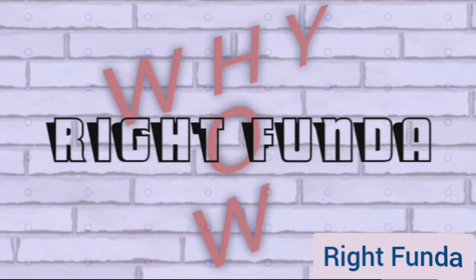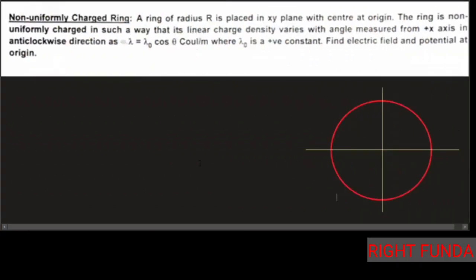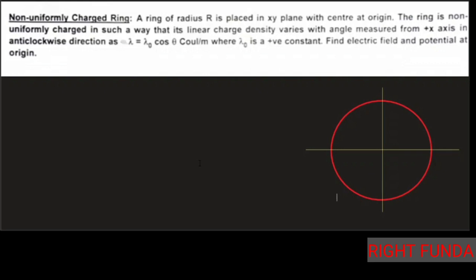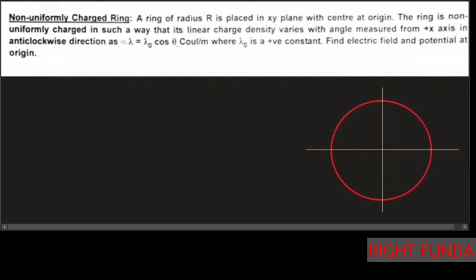Welcome to RideFunda. We have a problem due to a non-uniformly charged ring. A ring of radius R is placed in the xy-plane with center at the origin. The ring is non-uniformly charged such that the linear charge density varies with angle measured from the x-axis in anticlockwise direction as λ = λ₀·cosθ coulombs per meter, where λ₀ is a positive constant. Find the electric field and potential at the origin.